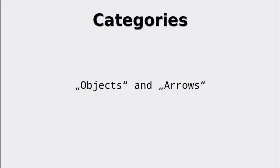Let's start by defining what a category even is. In the last video we have defined algebras as a domain and operations. Since a category is an even higher abstraction of algebras, we are really talking about objects and arrows, and they look like this.